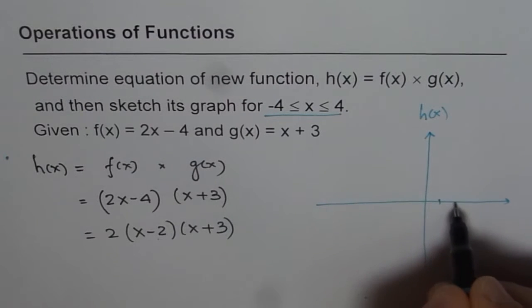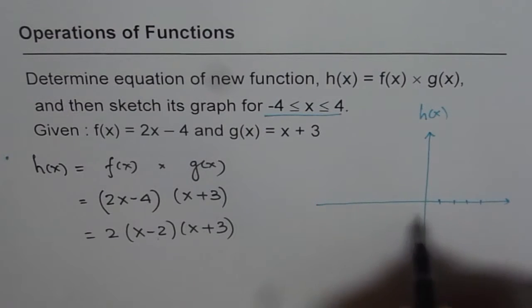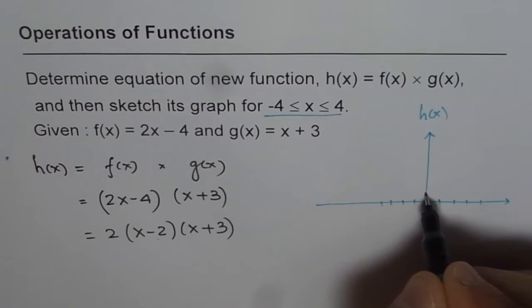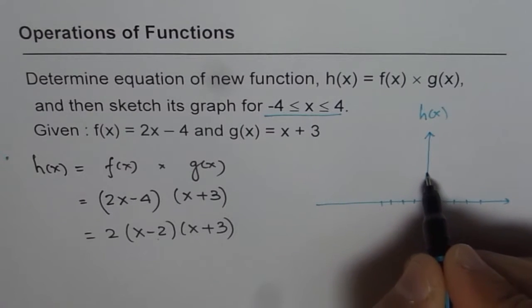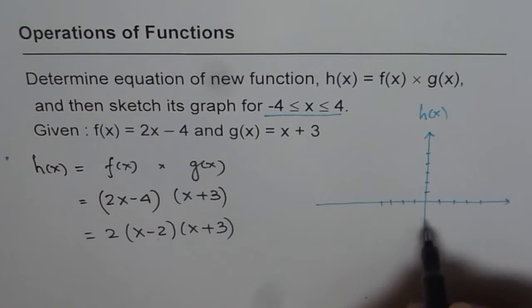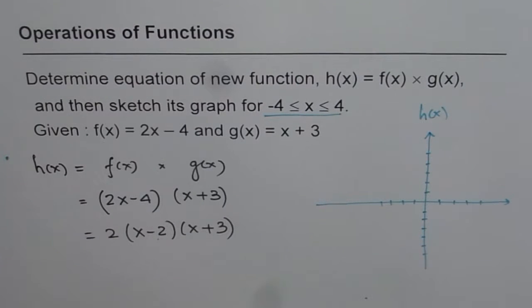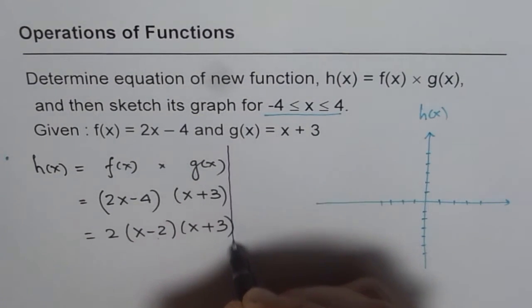Let's say this is 1, 2, 3, 4 and 1, 2, 3, 4. And let me make some divisions here. We'll decide about the scale depending on the y values which we calculate. So it's a good idea to calculate some values. So for that we can make a table of values.